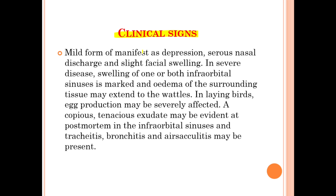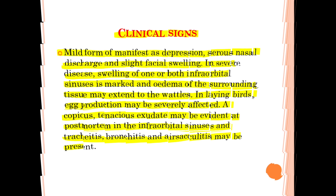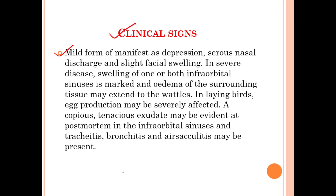In the mild form of infectious coryza, the infection is manifested as depression, serous nasal discharge, and slight facial swelling. In severe disease, swelling of one or both infraorbital sinuses is marked, and oedema of the surrounding tissue may extend to the wattles. In laying birds, egg production may be severely affected.